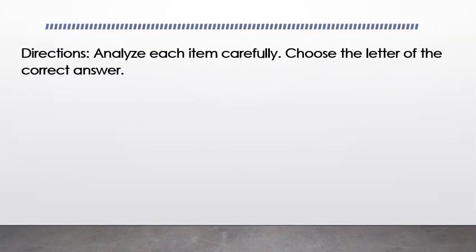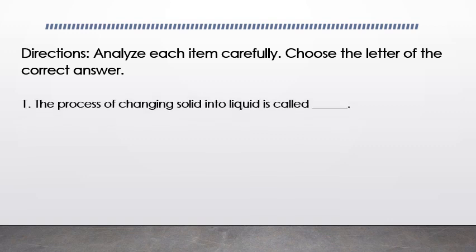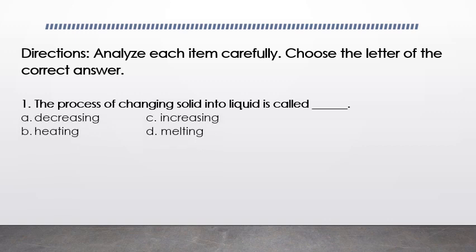Now let's have an activity. Get your paper and pencil. Analyze each item carefully. Choose the letter of the correct answer and write it on your paper. Number one: the process of changing solid into liquid is called blank. A. Decreasing. B. Heating. C. Increasing. D. Melting. The answer is D, melting.